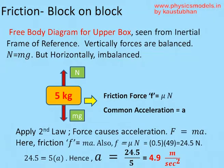We can now draw a free body diagram for the upper box. The vertical forces N and Mg are balanced. In the horizontal direction, we see an imbalanced force — a yellow arrow representing friction — which causes the mass to accelerate towards the right with acceleration A. Observing from an inertial frame of reference, we apply Newton's second law: F = MA. The friction force equals μN = MA, so A = 24.5 ÷ 5 = 4.9 meters per second squared.